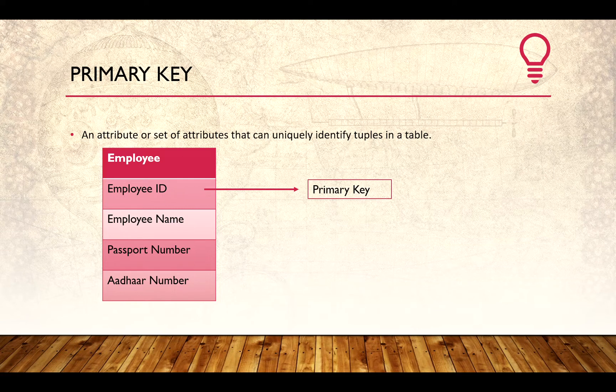We also consider data type and data size. A passport number is generally eight to ten digits, but an employee ID can be just one, two, three, or four digits — maybe four to five digits maximum. That shorter size will help us achieve quicker joins. That's about primary key; let's move on to the next.